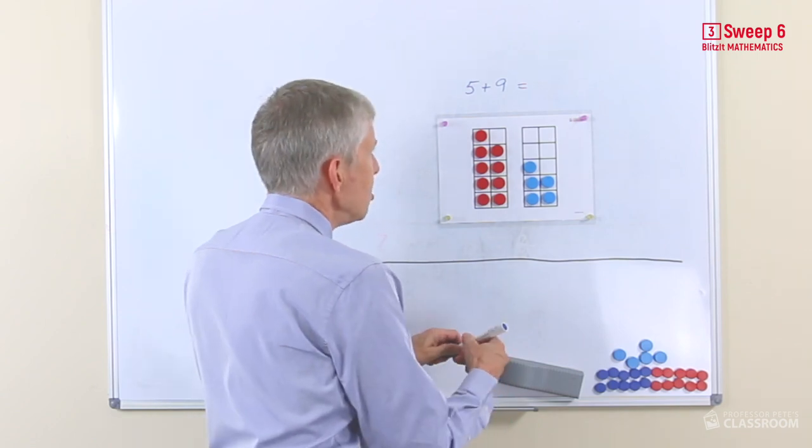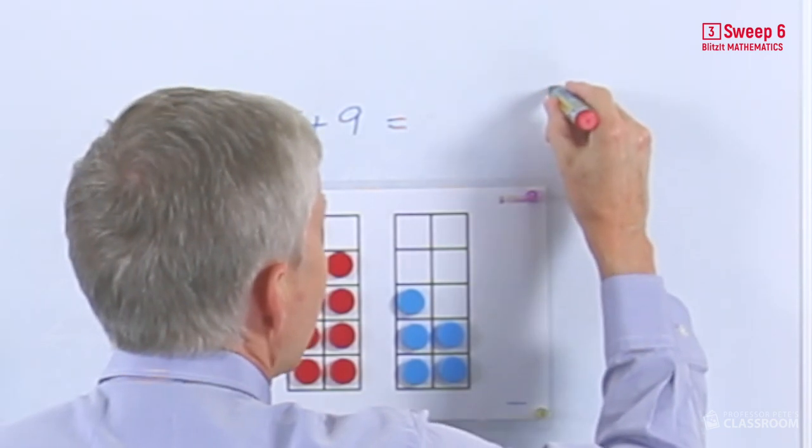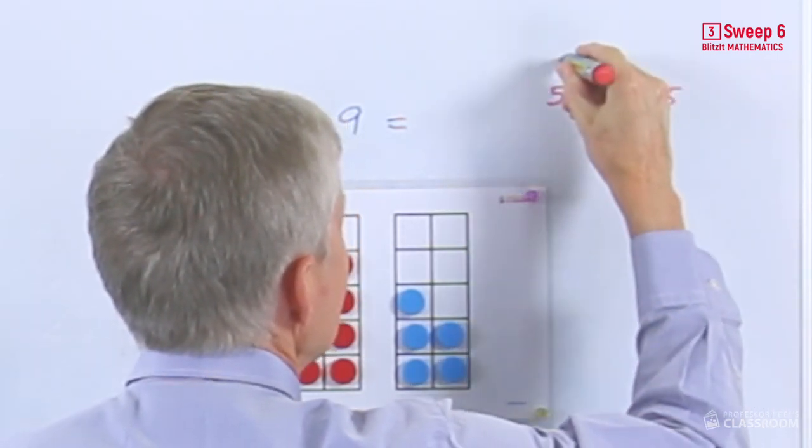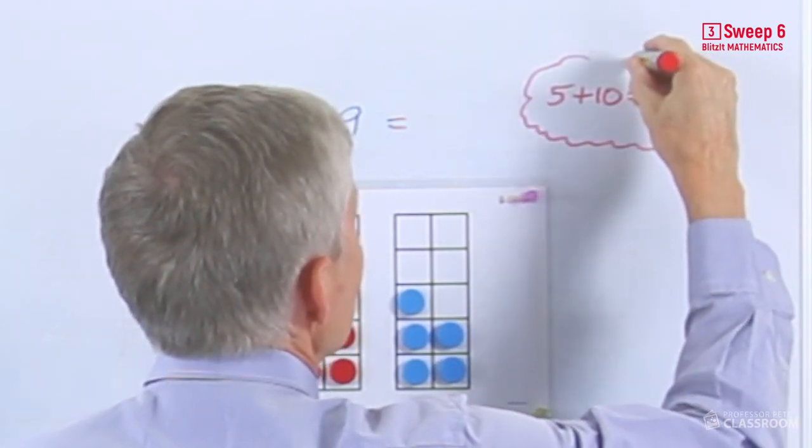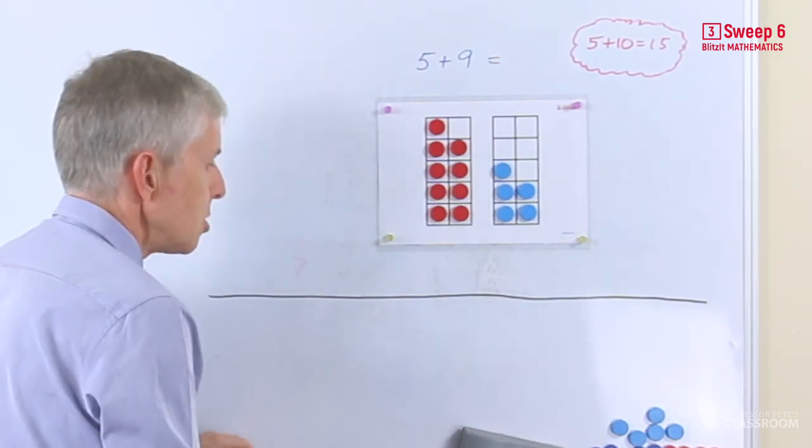So the strategy we're going to use is this one, that there is a known fact, five plus 10 equals 15. So we can sort of put that in a bit of a bubble, not a very neat bubble.